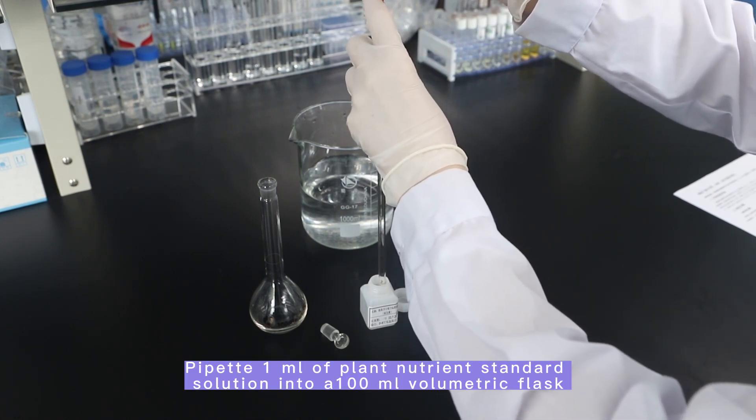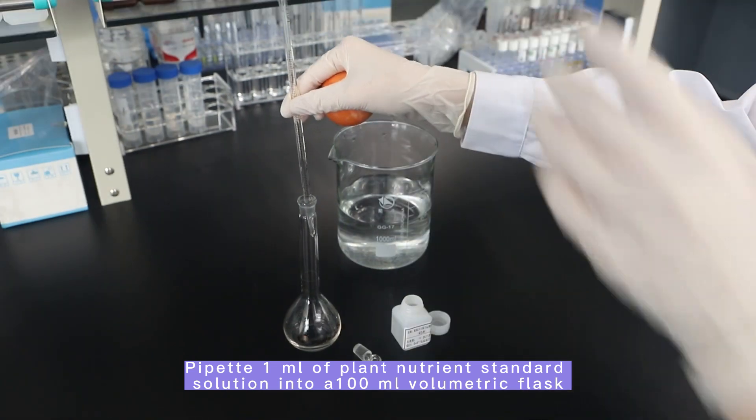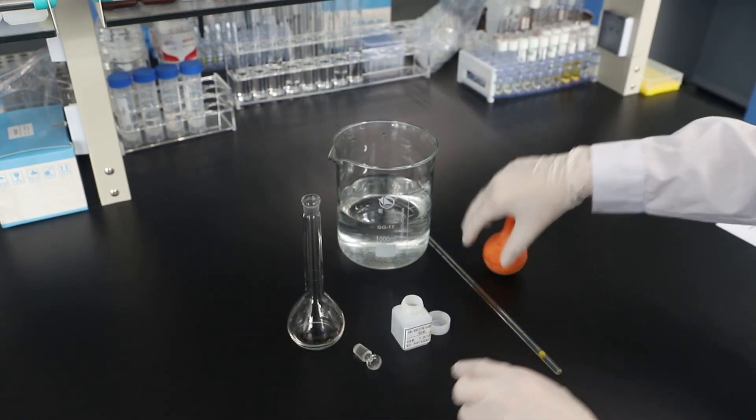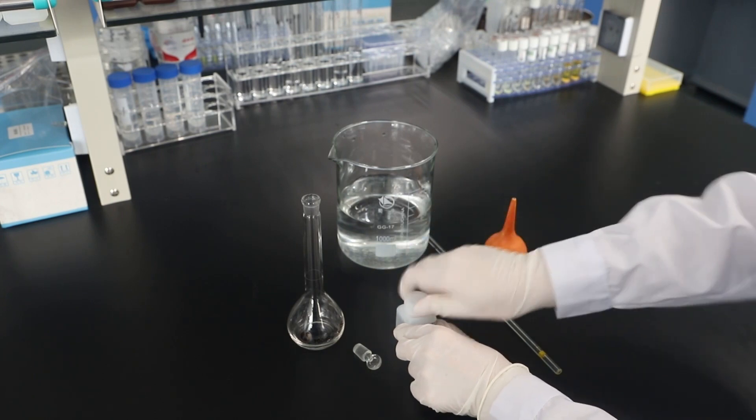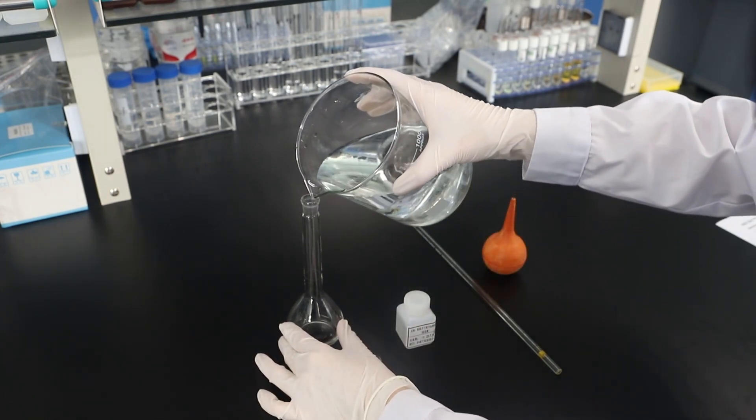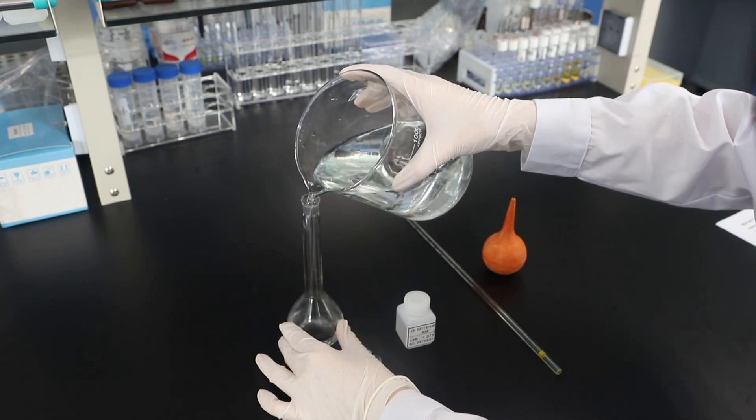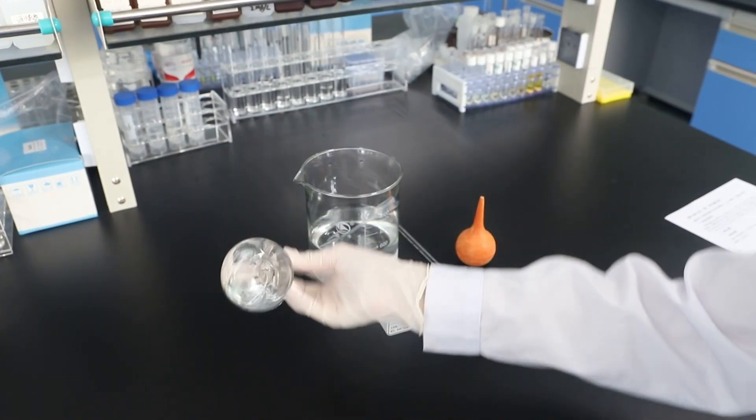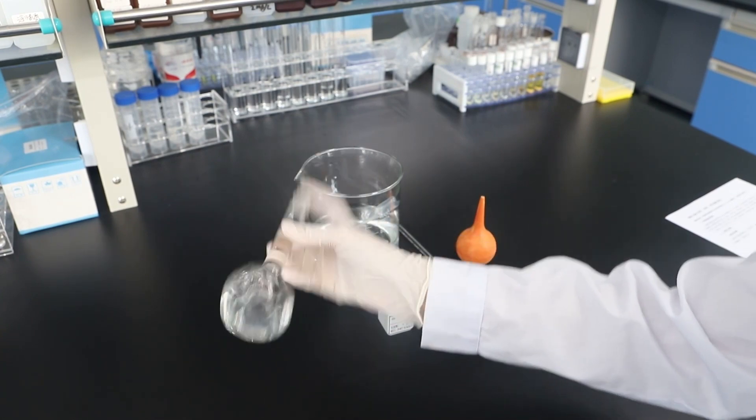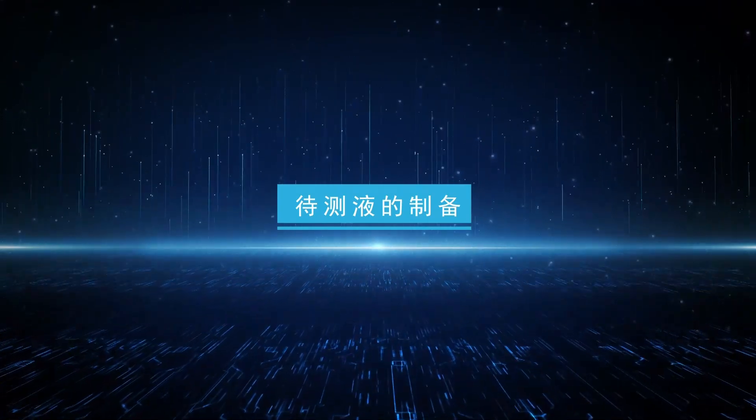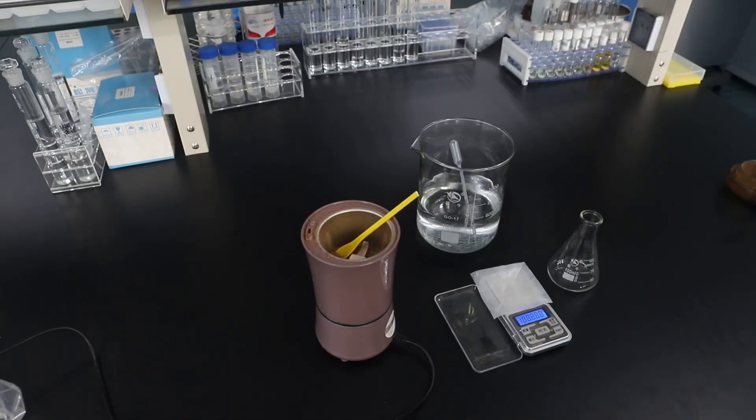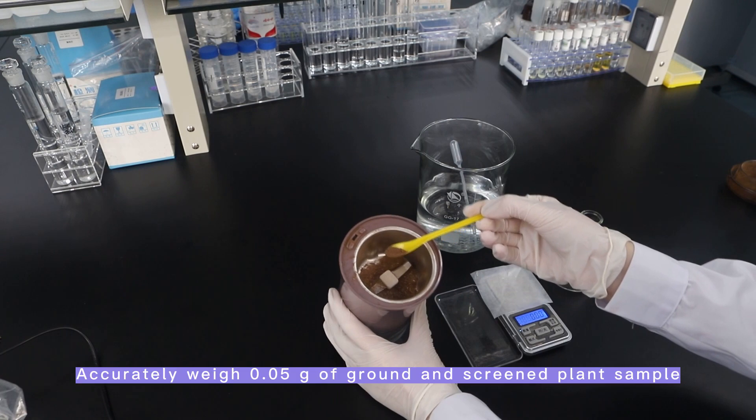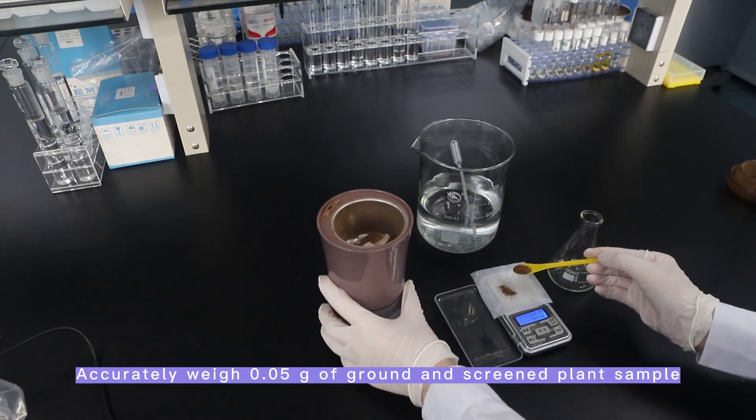Pipette 1ml of plant nutrient standard solution into a 100ml volumetric flask. Accurately weigh 0.05g of ground and screened plant sample.